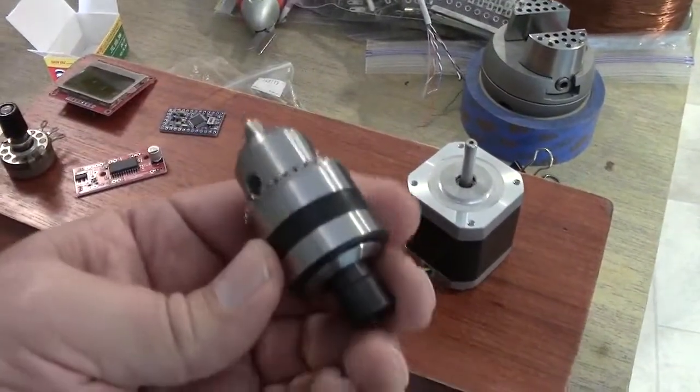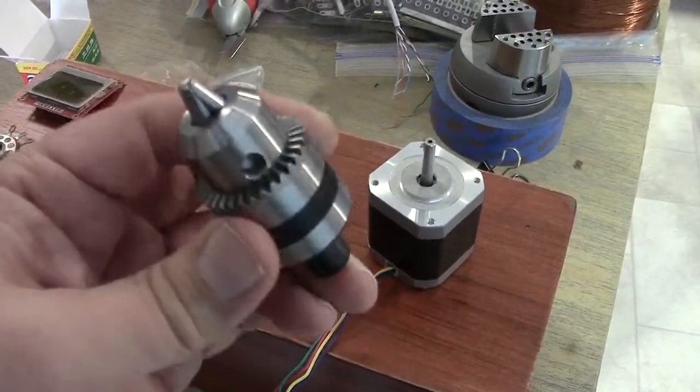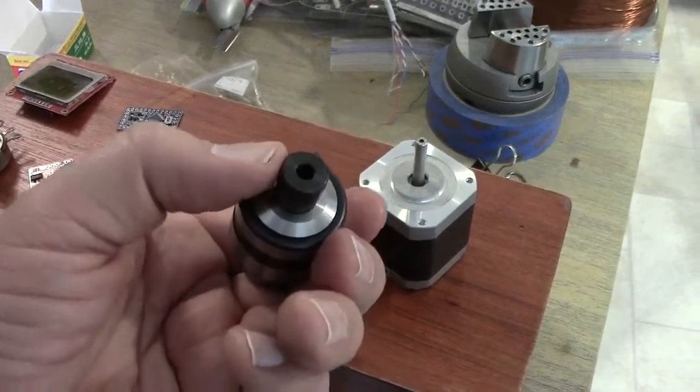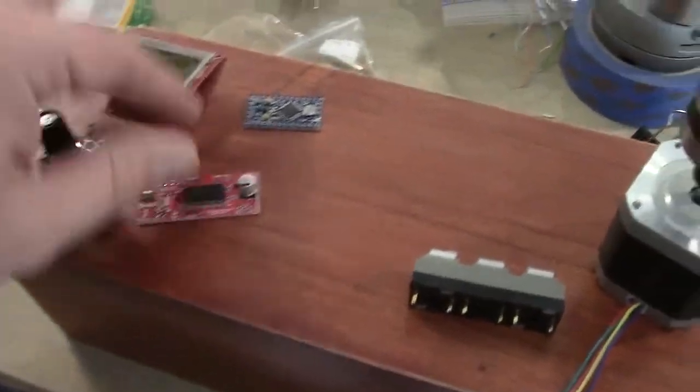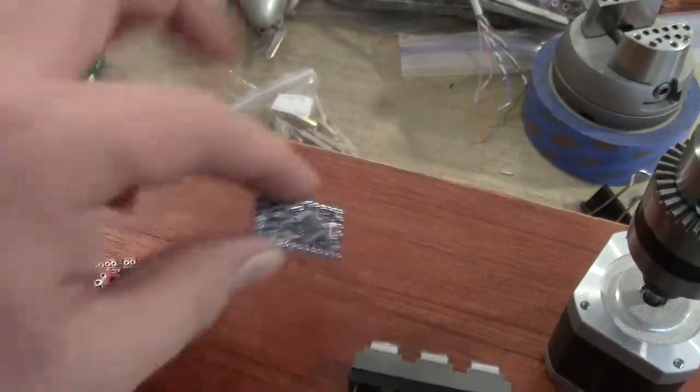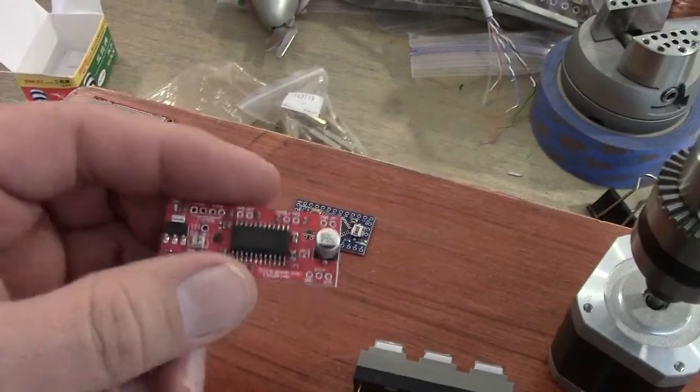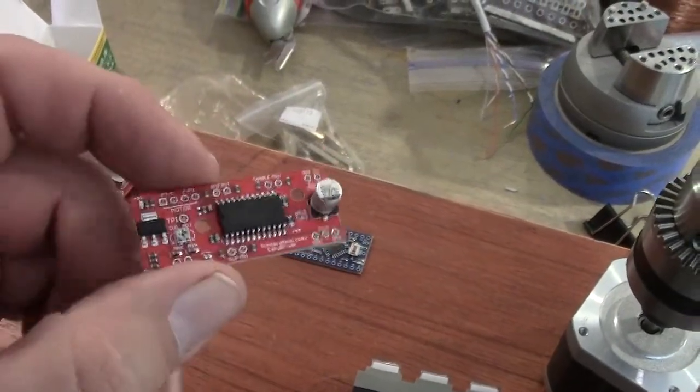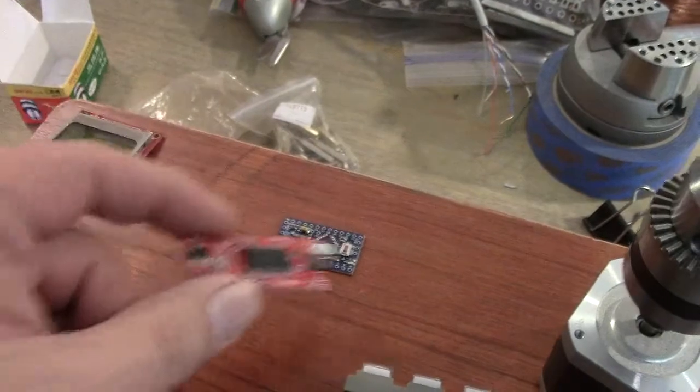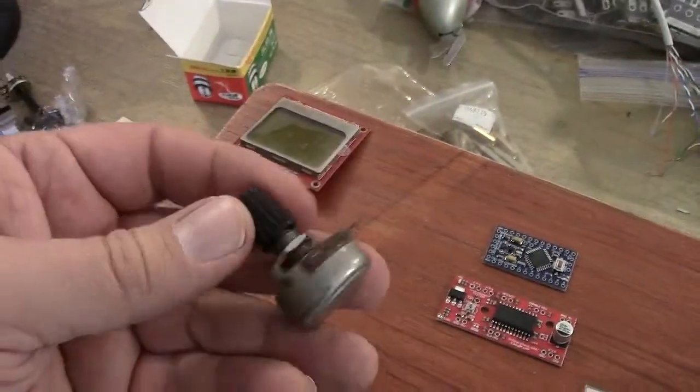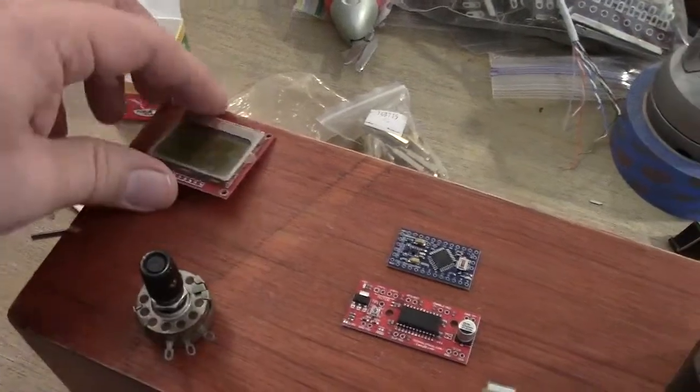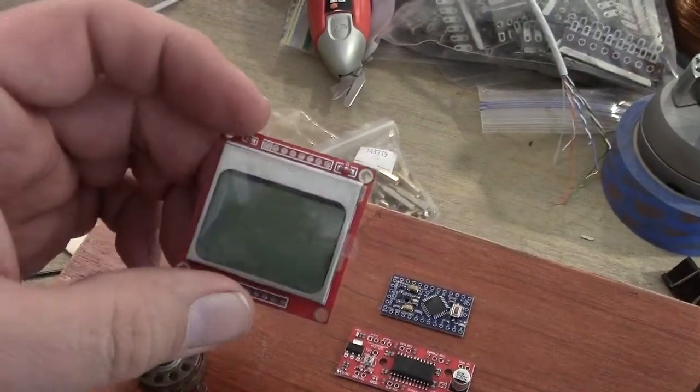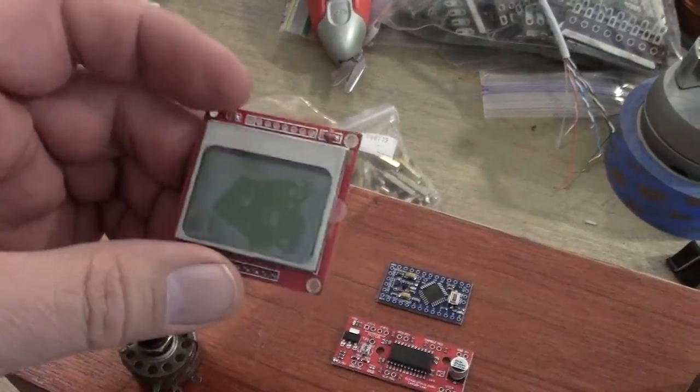I have one of those B12 drill chucks with an adapter for a five millimeter shaft. I have a Pro Mini Arduino board. The ubiquitous Schmalz house easy driver, potentiometer with a knob on it and a Nokia 5110 graphical display.